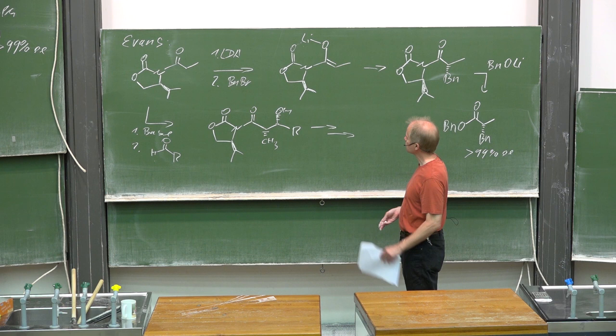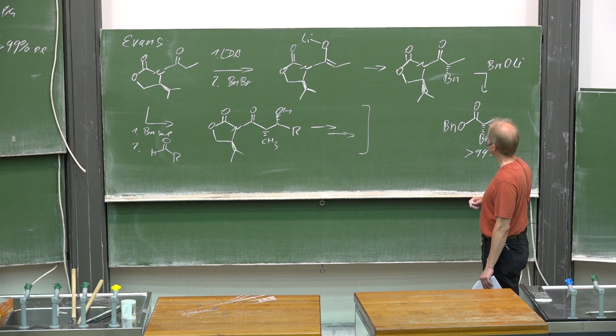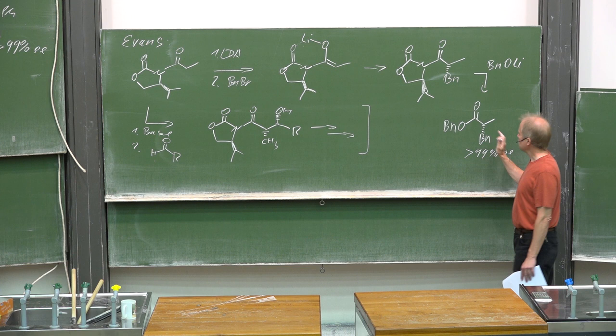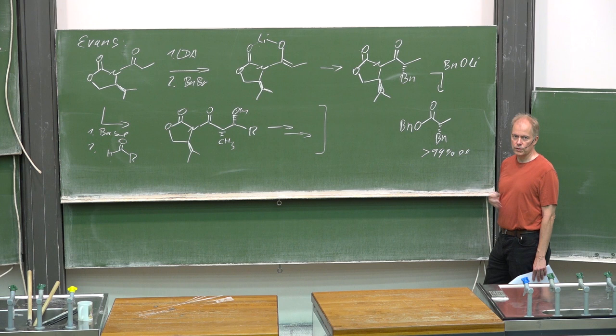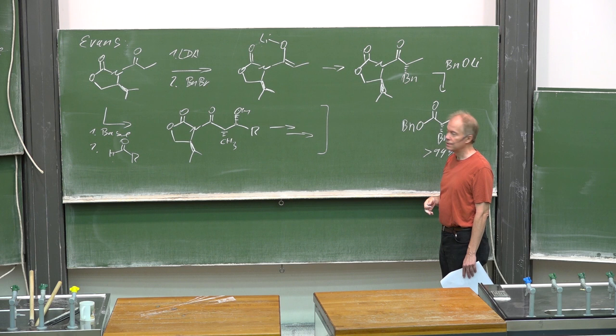An additional remark to the alkylation alpha to the carbonyl group with chiral auxiliaries: sometimes it might be a problem for an over-alkylation, that it is deprotonated a second time and then alkylated a second time, and you don't have a chiral center anymore there.